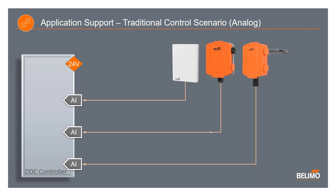On each of these points, the programmer of the DDC system needs to know some of the details on the sensor when programming and commissioning. For instance, with the pressure sensor, they would need to know the signal range such as 4 to 20 milliamp, the pressure range — perhaps it's a 0 to 10 inch water column sensor — and whether or not it's bidirectional. With that, they would apply an analog input configuration, set the scale range, and potentially convert it to another unit if needed.